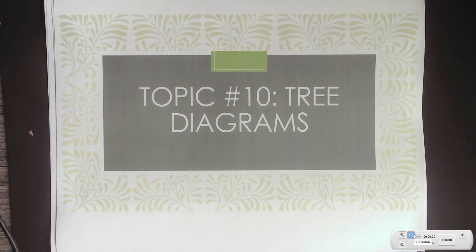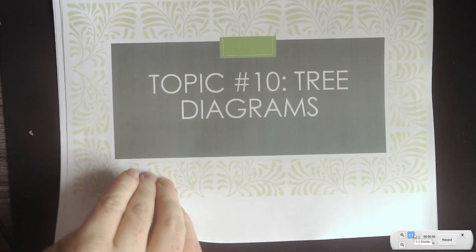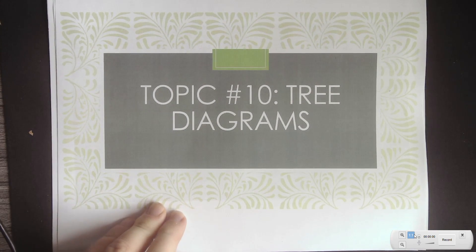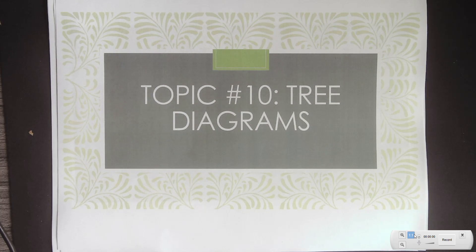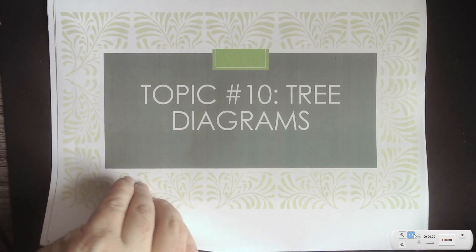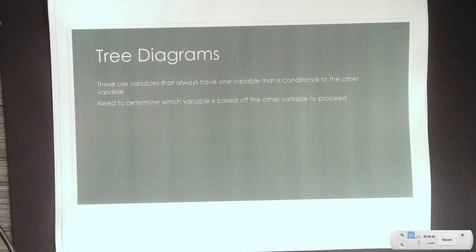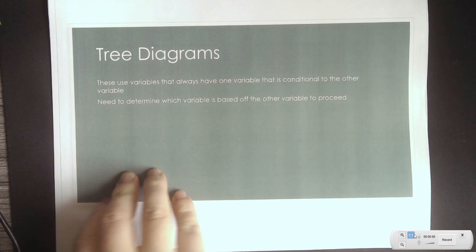Let's talk about tree diagrams. Tree diagrams are another form of organizing probability, just like Venn diagrams, except that in tree diagrams, one variable is conditional on the other variable. A tree diagram uses variables where one is always based on the other, so we need to determine which variable is dependent on the other variable to proceed.